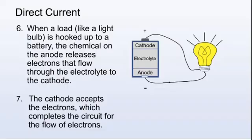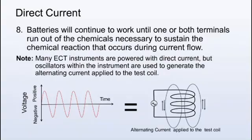When a load such as a light bulb is hooked up to a battery, the chemical on the anode releases electrons that flow through the electrolyte to the cathode. The cathode accepts the electrons, which completes the circuit for the flow of electrons. Batteries will continue to work until one or both terminals run out of the chemicals necessary to sustain the chemical reaction that occurs during current flow.